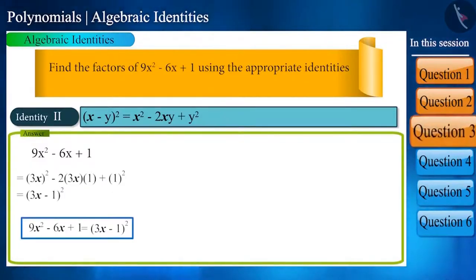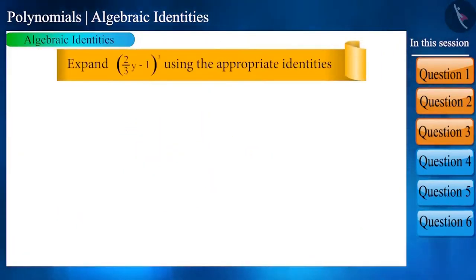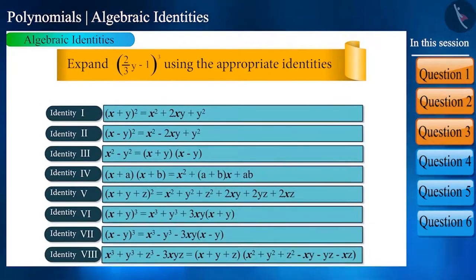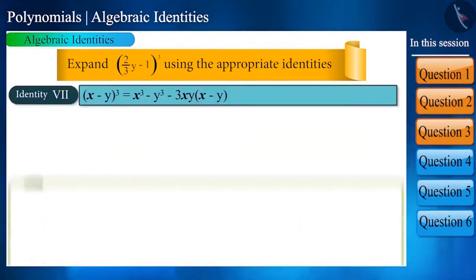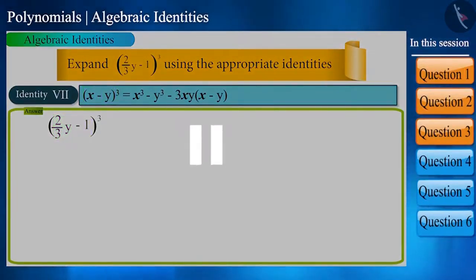Let's go ahead and take the next question: Expand (2/3y - 1) to the power of 3 using the appropriate identities. Here, we have to use the identity directly, where x is 2 by 3y and y is 1. Pause the video and try to solve it yourself.